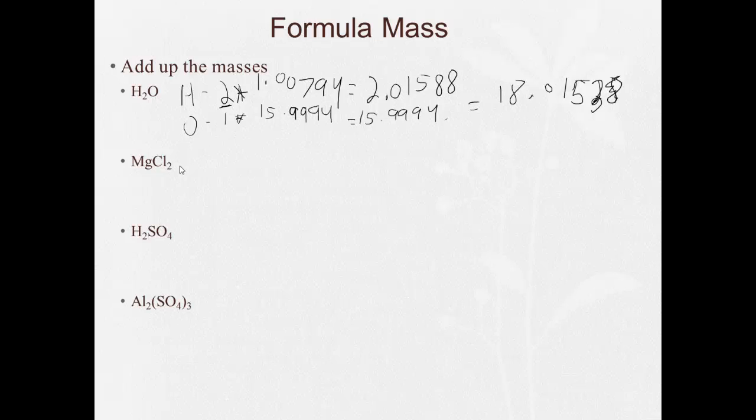So I have 1 magnesium, so Mg1 times 24.305. Cl2 times, I want to say that's 35 point something. Yep, 35.453.